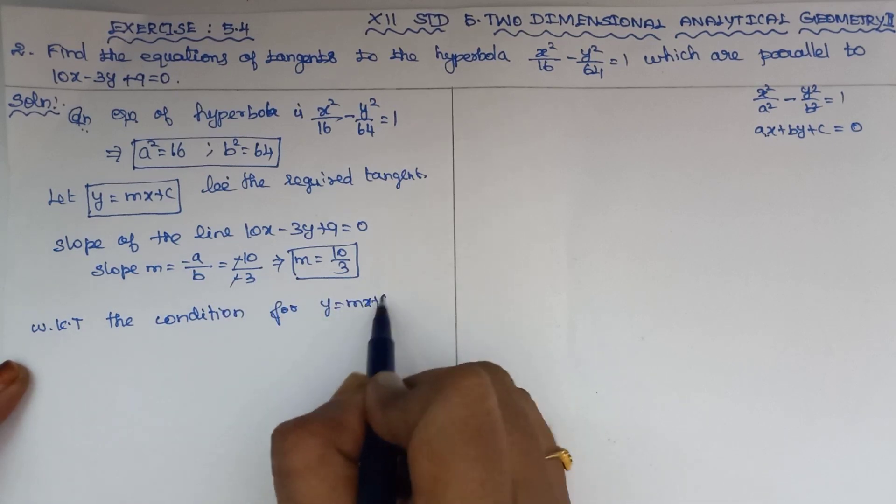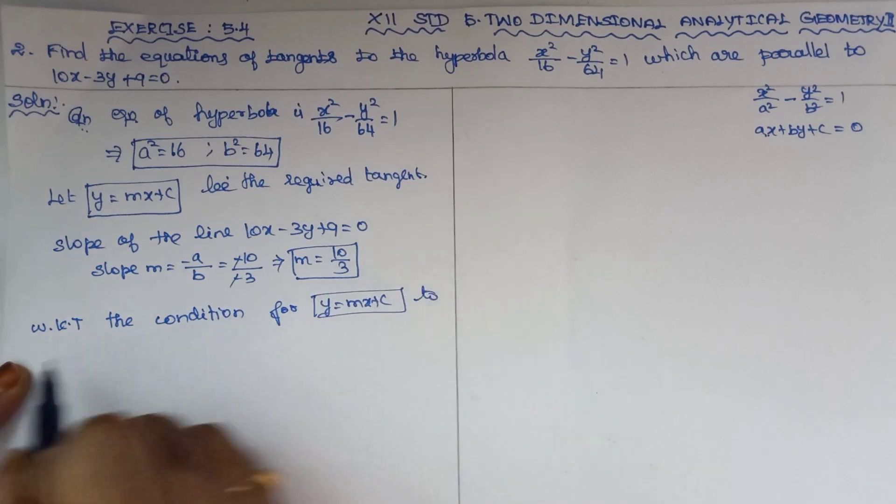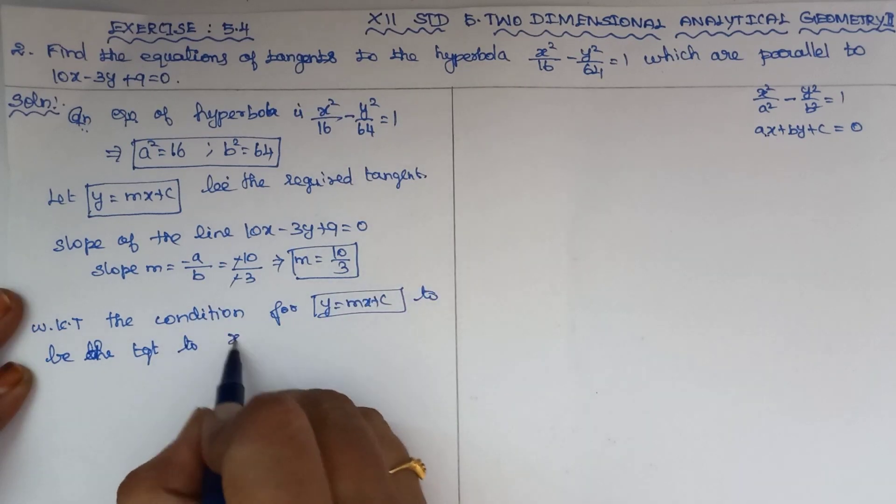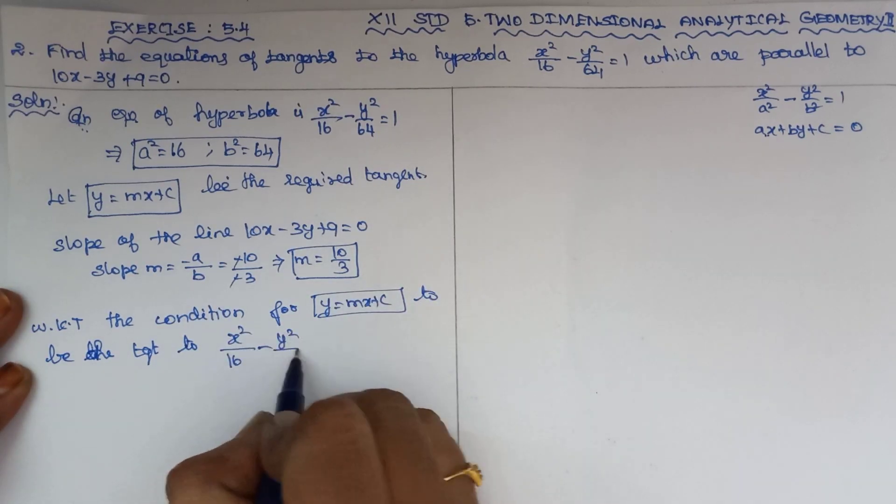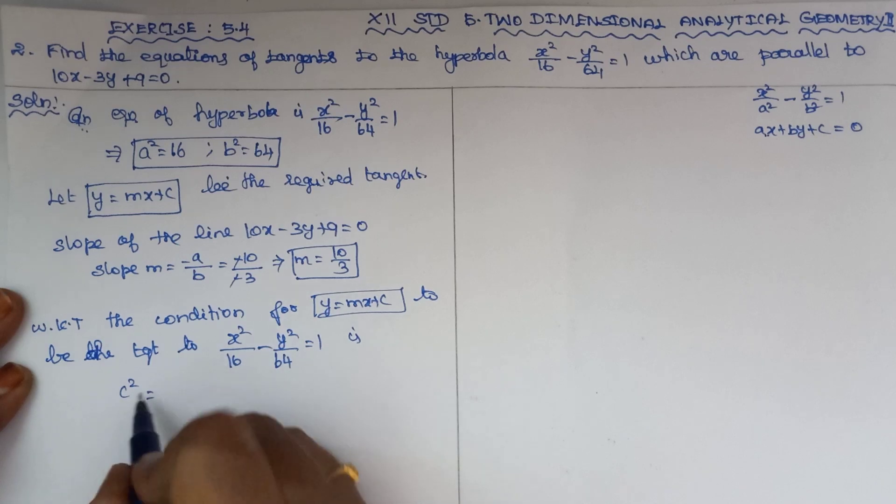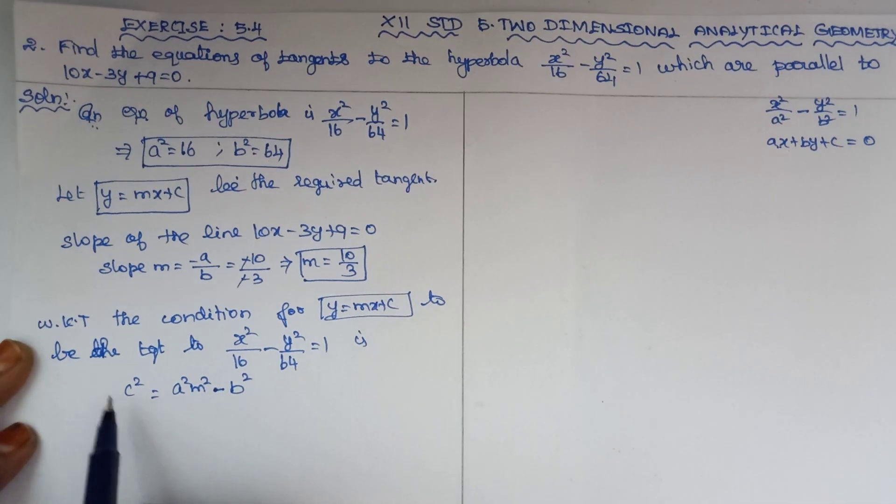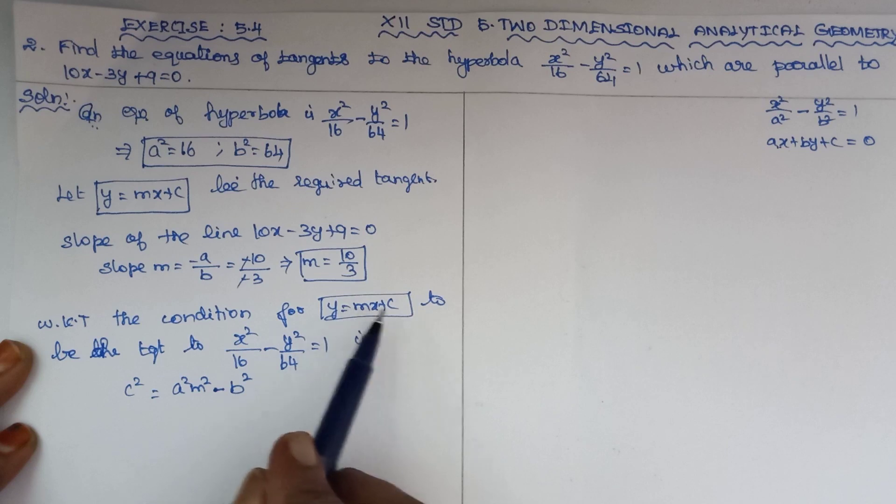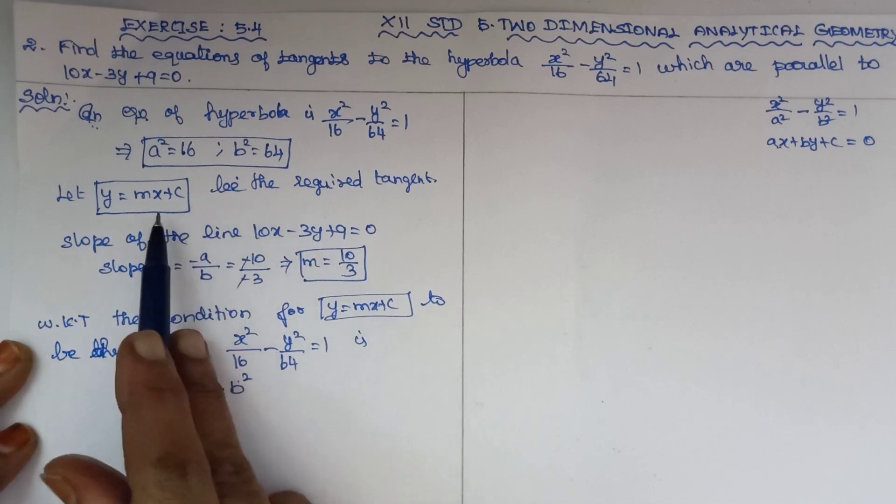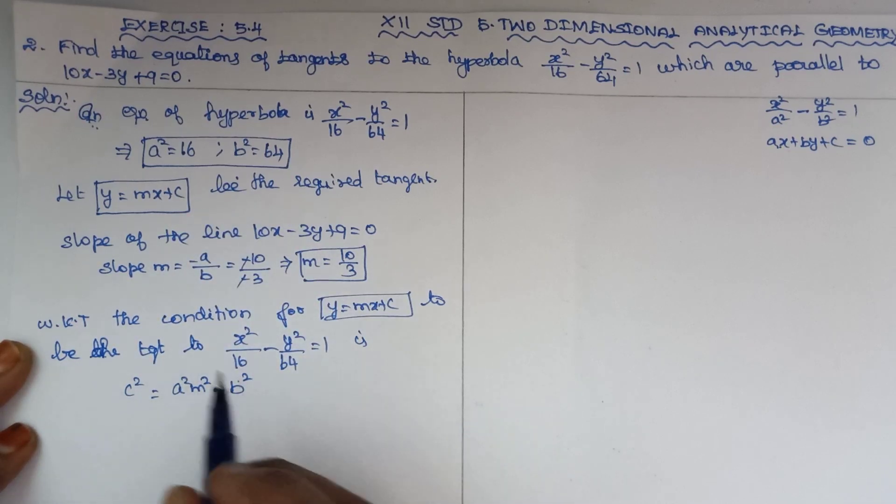y equal to mx plus c to be a tangent to the hyperbola x square by 16 minus y square by 64 equal to 1 is: C square equal to a square m square minus b square. That's the condition. When the hyperbola has y equal to mx plus c as a tangent, the condition is C square equal to a square m square minus b square. We have values for a square, b square, and m square, so we substitute to find C.